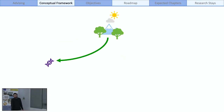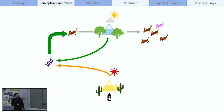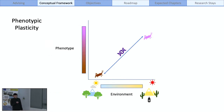However, nowadays we know that most organisms are able to respond to environmental changes by altering their phenotype — changing their behavior, their physiology, their morphology, life history traits — doing that by altering their gene expression. So it can happen that the same genotype can produce different phenotypes depending on the environment.